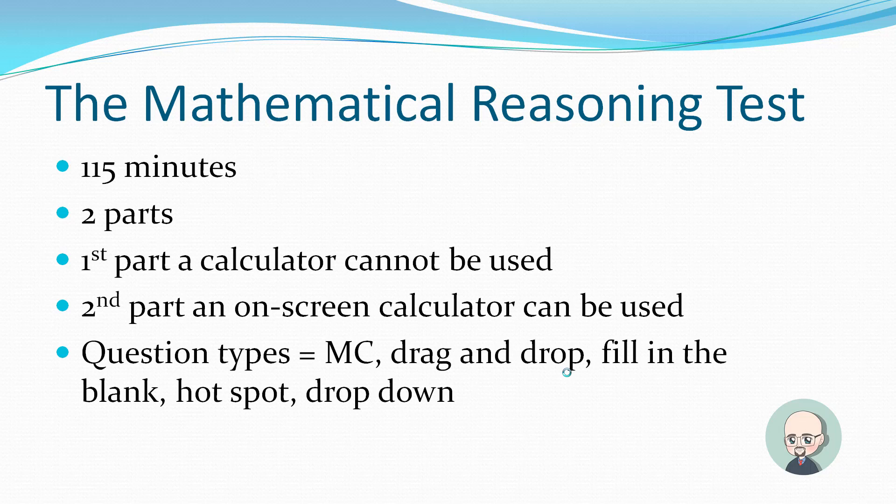It has several question types, multiple choice. That's the regular sort. Drag and drop, fill in the blank, hotspot, and drop down. Fill in the blank is like it sounds. Hotspot means you pick what you're filling out on a particular diagram. This is mostly on the graph questions. So they would have, let's say the answer was something like negative one, negative one. You'd look at the graph, you'd go over two dots and down a dot, and you'd pick that particular dot. Drop down is when you click on a drop down menu, like on a website, and select the proper answer.